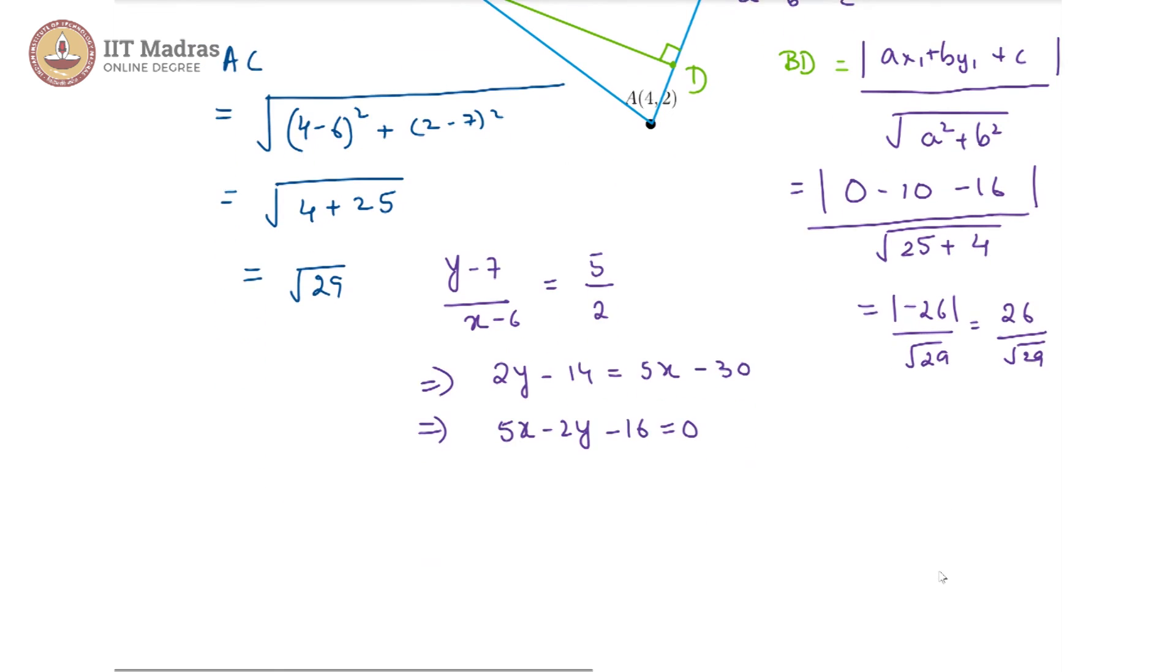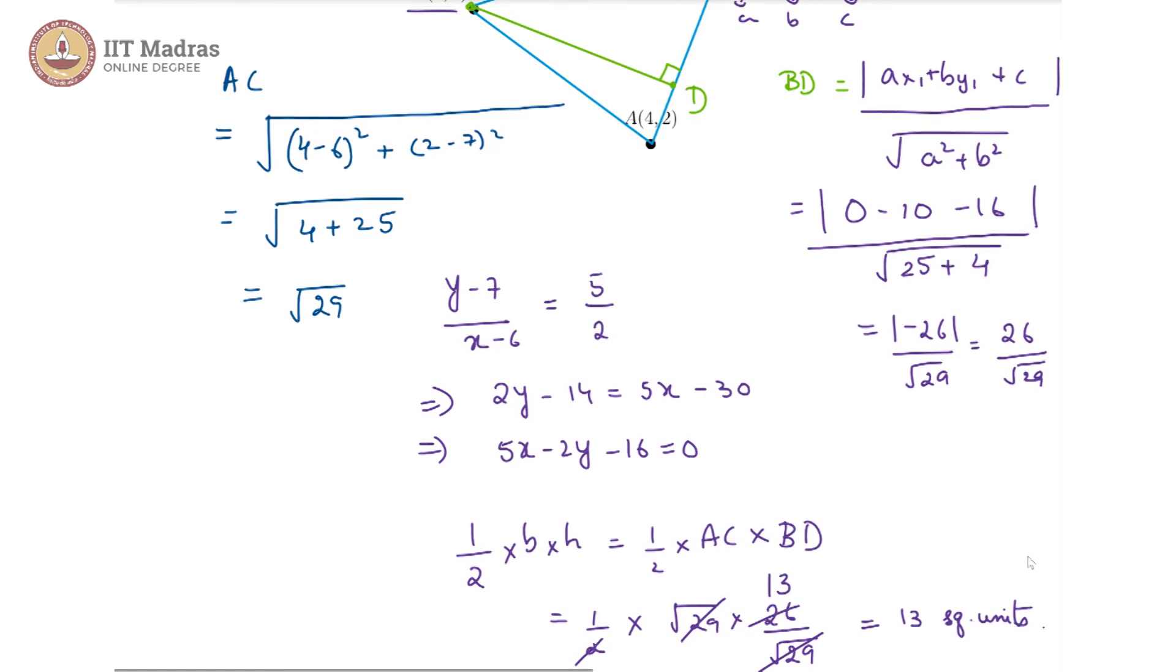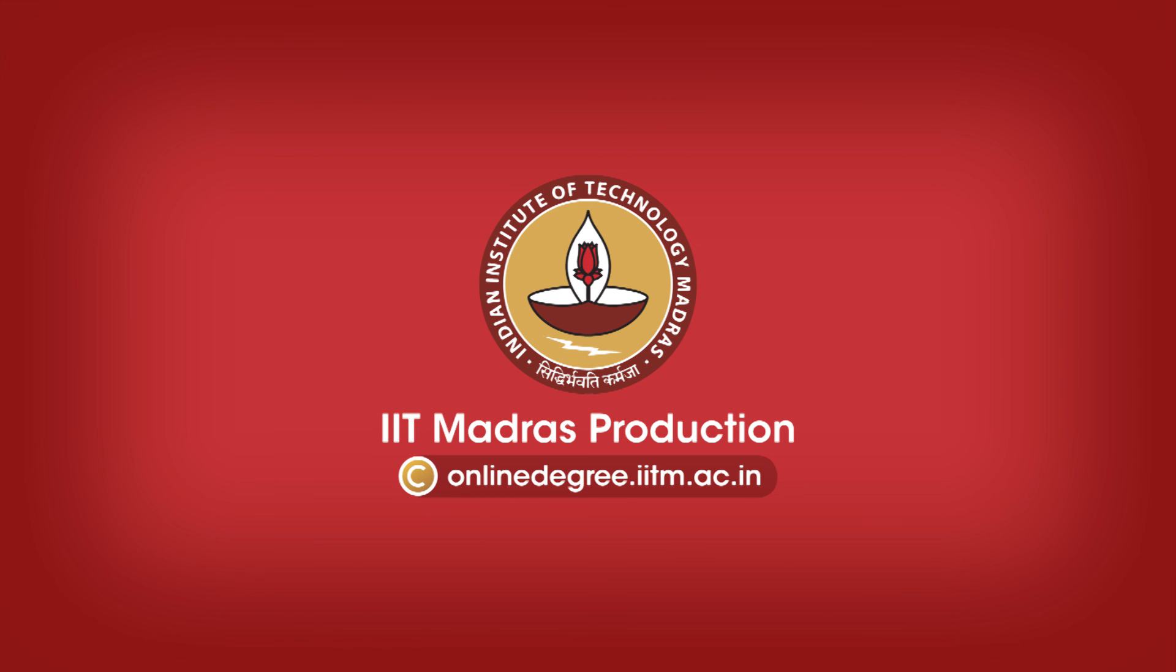Combining these two quantities we get our area as half into base into height which would then be half into AC into BD which then gives us half into root 29 into 26 divided by root 29. root 29 root 29 cancels, 2 cancels with 26 giving us 13. So we get 13 square units. So this is the area of our triangle ABC.